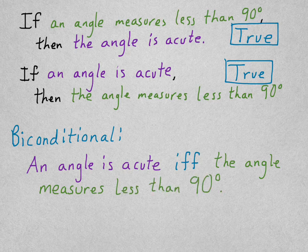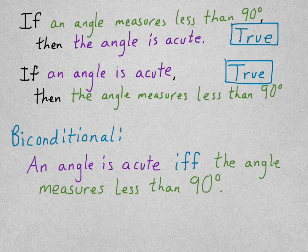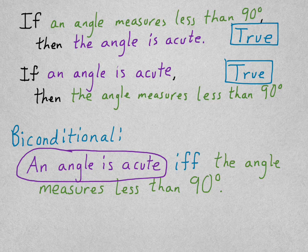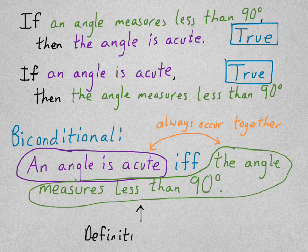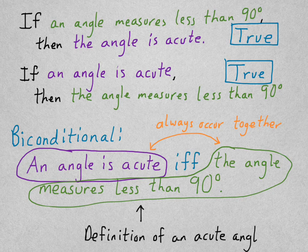So this is saying that the only way an angle can be acute is if it measures less than 90. If it's not less than 90, it's not acute. Those two things have to go together. This part and this part always occur together. The only way that it can be acute is if it measures less than 90 degrees. This is the definition of an acute angle.